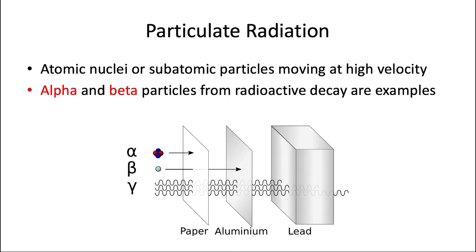Particulate radiation refers to atomic nuclei or subatomic particles moving at very high speeds. So if electromagnetic radiation was all about waves, particulate radiation is all about discrete particles made up of matter. So these include alpha and beta particles from radioactive decay, as well as protons and neutrons. So the alpha particles are helium nuclei, and they're stopped by paper.